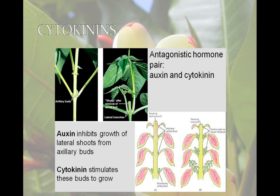Cytokinins promote cytokinesis, or cell division. They are produced in growing tissues like embryos, roots, and fruit. Cytokinins are influenced by auxin concentration. For example, a terminal bud produces auxin, which inhibits the axillary buds. If the terminal bud is removed, it allows cytokinins from the roots to activate the axillary buds. This is why we prune plants to stop them from getting long and leggy, and to cause them to get bushier and fuller.